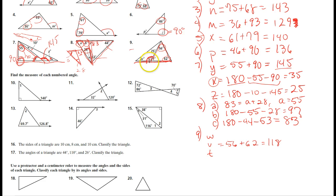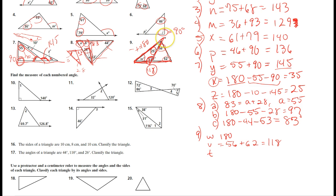For W, I set it up as one hundred and eighty minus twenty-five minus one hundred and eighteen, which leaves W equals thirty-seven.